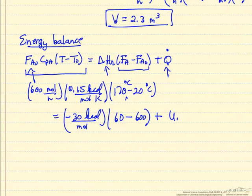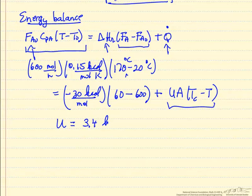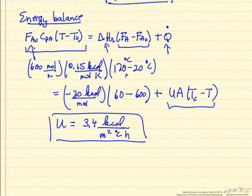is a heat transfer coefficient, an area for heat transfer, and then the coolant temperature minus the reactor temperature. This is going to be a negative term because the coolant temperature is well below the reactor temperature. If we do the calculations and check the units, we can see that the heat transfer coefficient that we would need is 3.4 kcals per square meter per degree C per hour, and this is the heat transfer coefficient to maintain the reactor isothermally at 170 degrees.